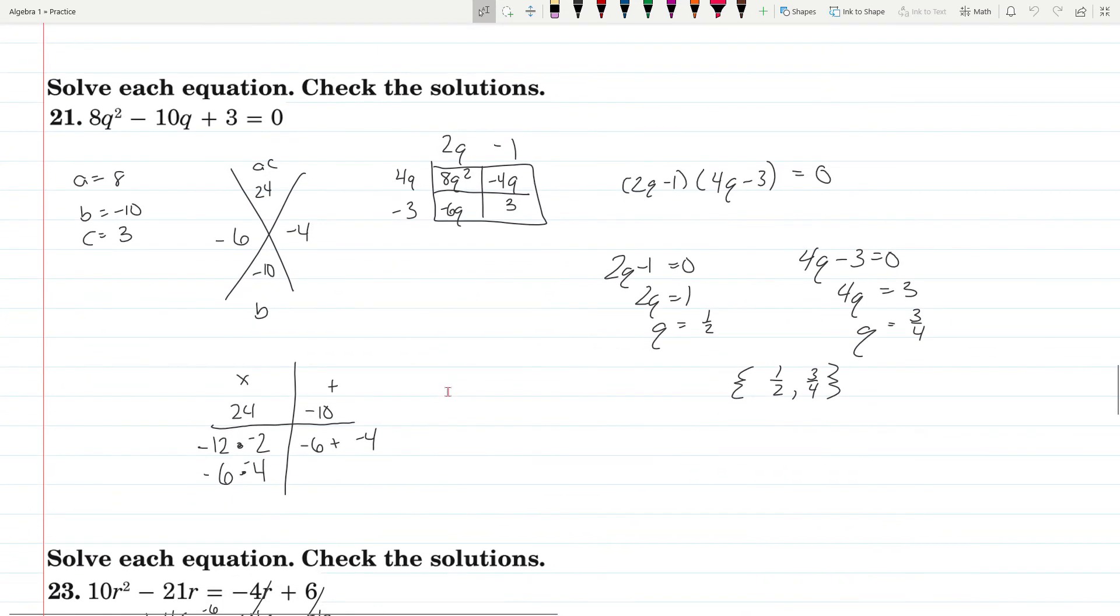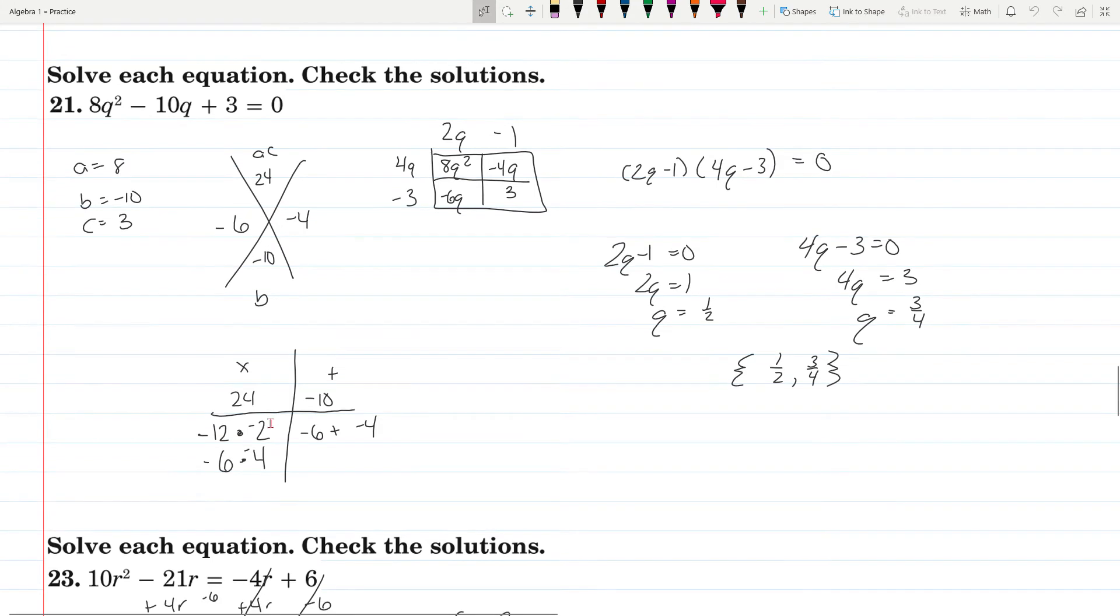In problem 21, we're set equal to 0, so we're good to go. A is 8, B is negative 10, C is 3. A times C is 24, add up to negative 10. It took me a few seconds because I know 12 times 2 is 24, but we need these both to be positive or both to be negative to get a positive result. 6 times 4. Negative 6 times negative 4 is a positive 24. Negative 6 plus negative 4 is a negative 10.